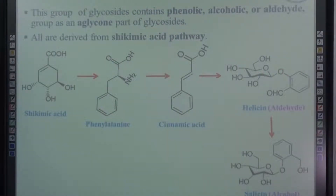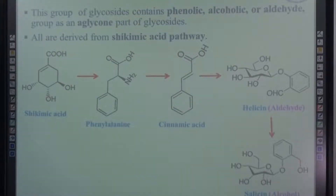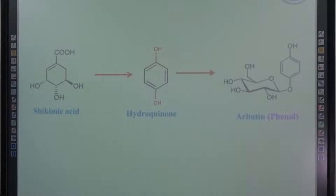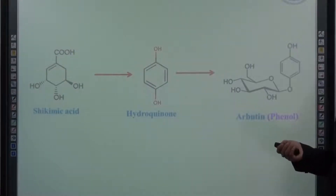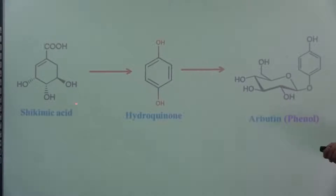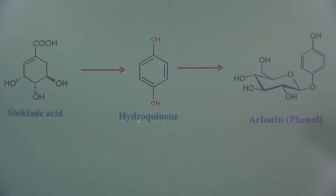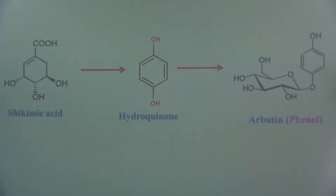Halicine can further convert into salicine. If you look at the structure of salicine, it is an example of an alcoholic glycoside. Another example of simple phenolic glycosides is where shikimic acid gets converted into hydroquinone. Hydroquinone, upon attachment with sugar, forms arbutin. Arbutin is an example of a phenolic glycoside — if you look at the aglycon part, it contains a phenolic group where the OH group is attached to the benzene ring.